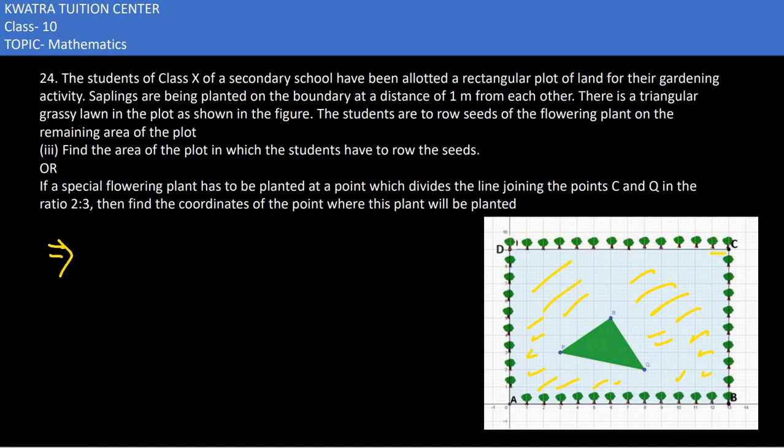You have to take the total area which is area of ABCD. ABCD is a rectangle, so do length into breadth. Length is from 0 to 13, so that's 13. Breadth is 9. 13 times 9 you would get 117.